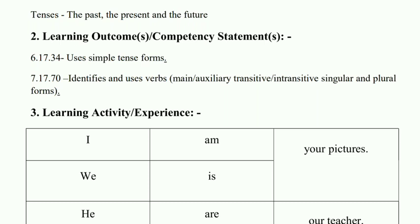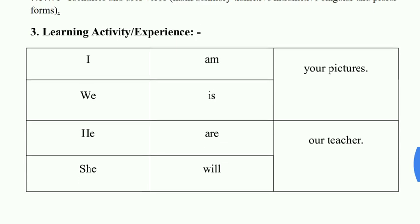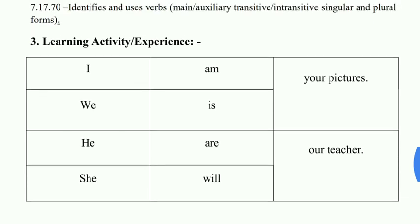In the learning activity, there is a table with three columns given. Some words are provided: subjects like I, we, he, she — these are pronouns. Then verbs: am, is, are, will. And the objects: your pictures, our teacher.